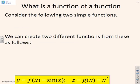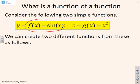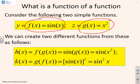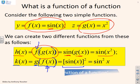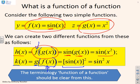So what is a function of a function? Consider the following two examples. We have f of x equals sine x and g of x equals x squared. From these we can create two different functions. For example, h of x is f of g of x, which gives sine of g of x, or sine of x squared. Alternatively, k of x is g of f of x, which gives sine x all squared, or sine squared x. These are called functions of a function because f has as its argument another function g of x, or g has as its argument another function f of x.